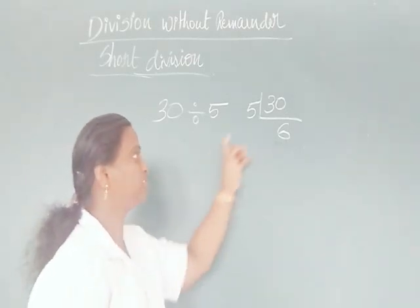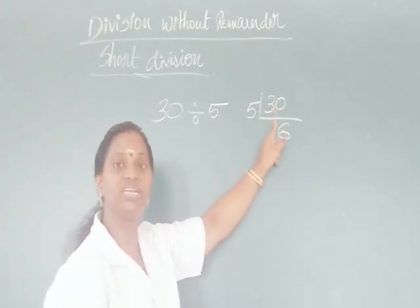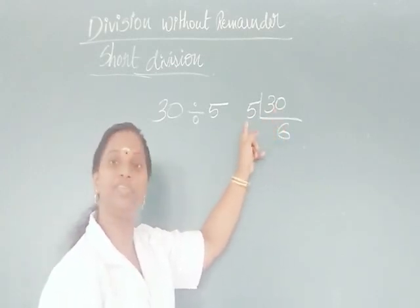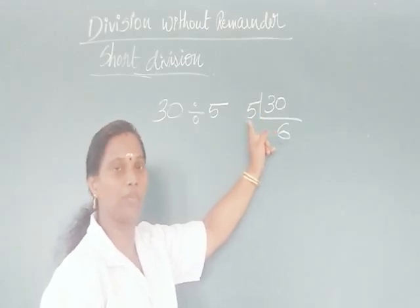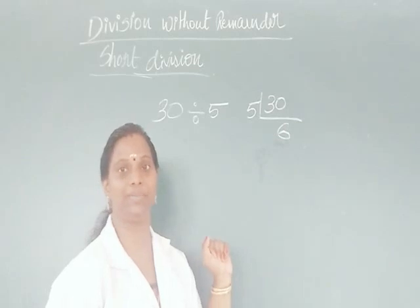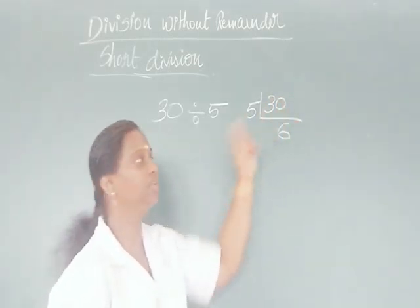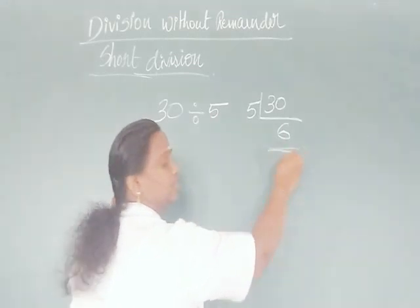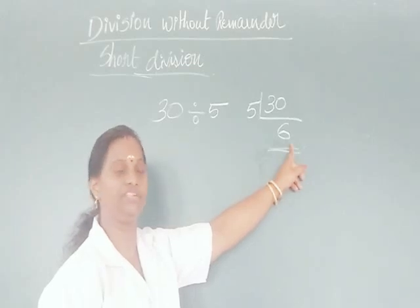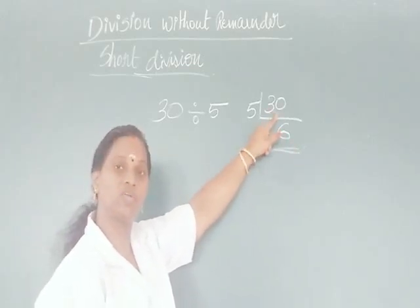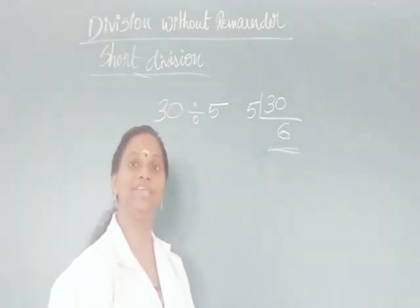First, when you get numbers like this, check whether the first digit is divisible by the divisor. Is 3 divisible by 5? No. So you take 30 together. Then 6 fives are 30, so our answer is 6. Here, 6 is called the quotient, 30 is called the dividend, and 5 is called the divisor.